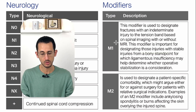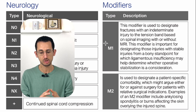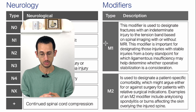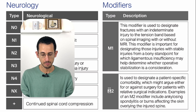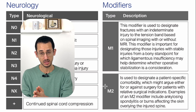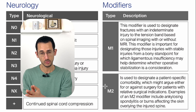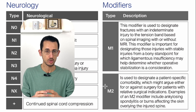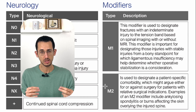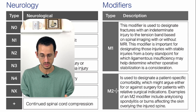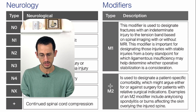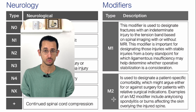The modifiers are M1 and M2. M1 addresses indeterminate injury to the posterior ligamentous structures or tension band injuries. M2 is patient-specific — for example, patients with ankylosing spondylitis, which was not included in the TLICS score, or patients with burns affecting the skin overlying the likely injured spine.